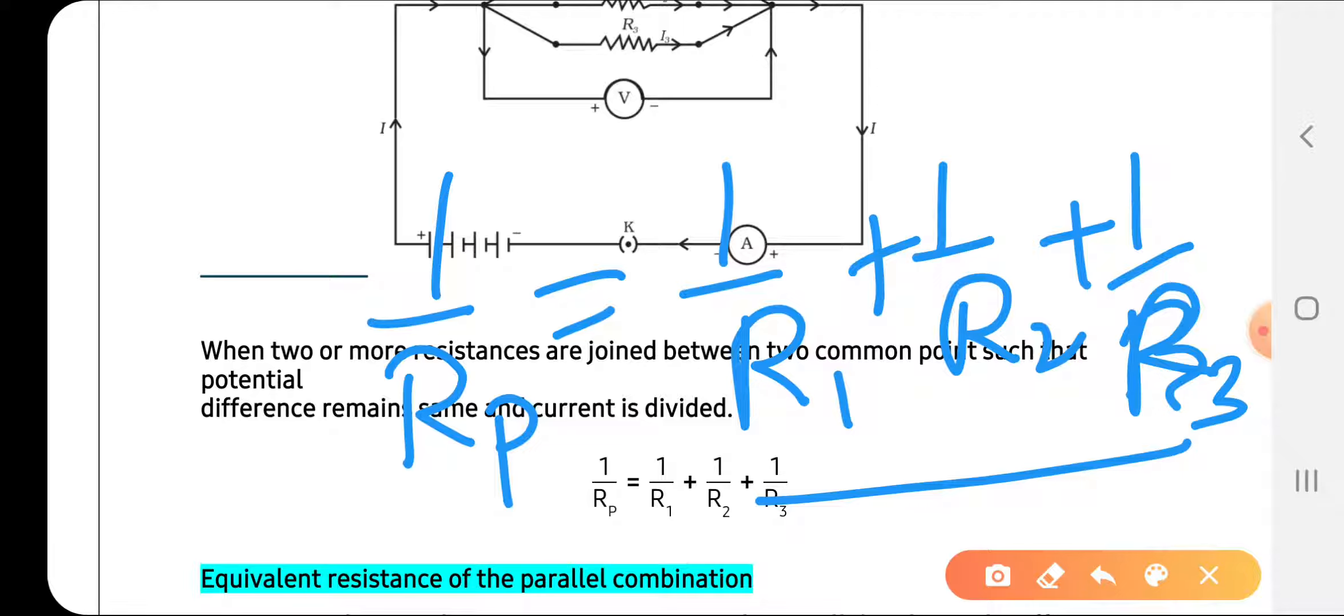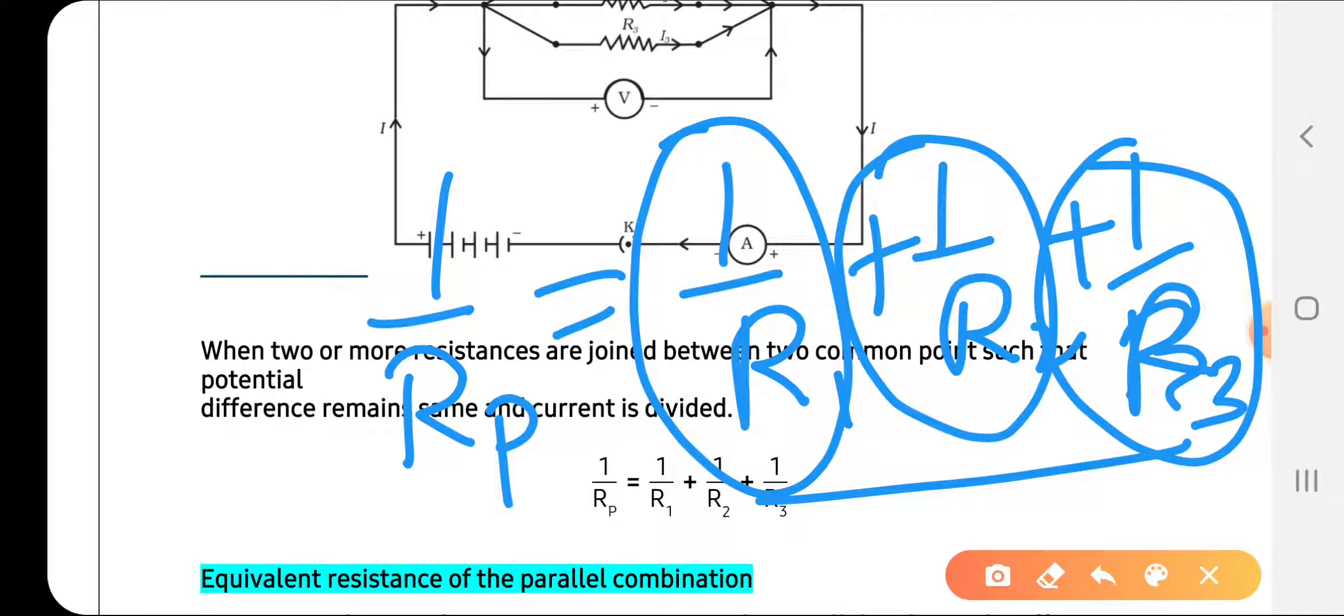When we connect in parallel, the values that we get for resistance are very small values, whereas in series we have very large values R1 plus R2 plus R3. In parallel, we have fractions, meaning values of resistance are much smaller when we use parallel combination.